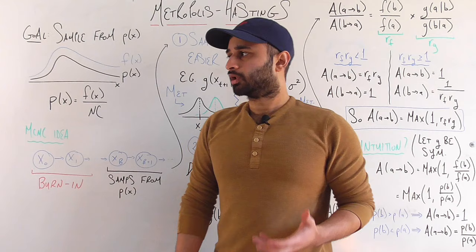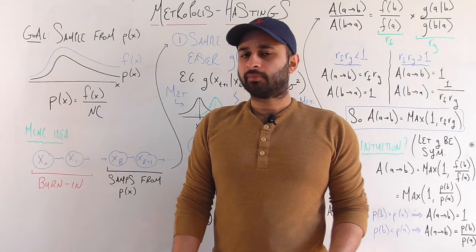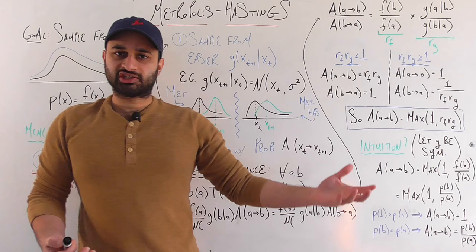That was all covered in our initial MCMC video linked in the description. But the big question was: how exactly do we design these transition probabilities from one state to the next? Metropolis-Hastings goes about it in the following way.